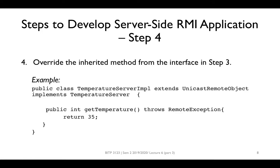In the fourth step, we need to provide a concrete implementation for the inherited method — that is, the method defined in the interface implemented by the class. For example, here we have defined a method named getTemperature in the interface TemperatureServer. In this step, we override the method to provide the concrete implementation. This method returns 35.